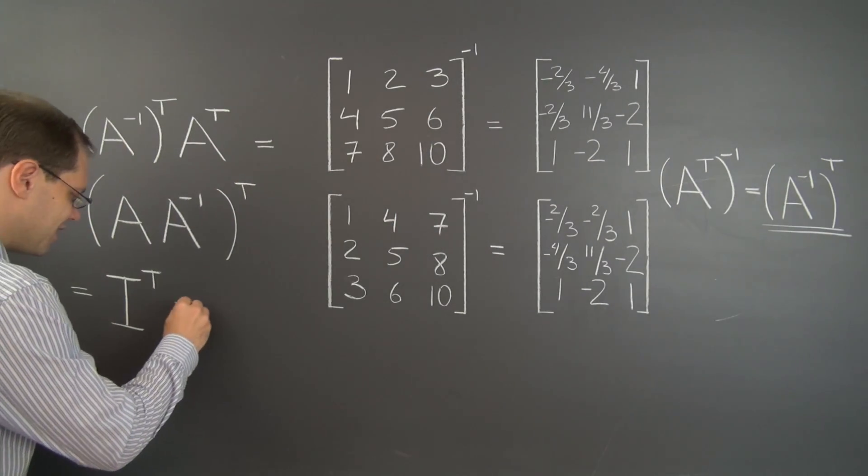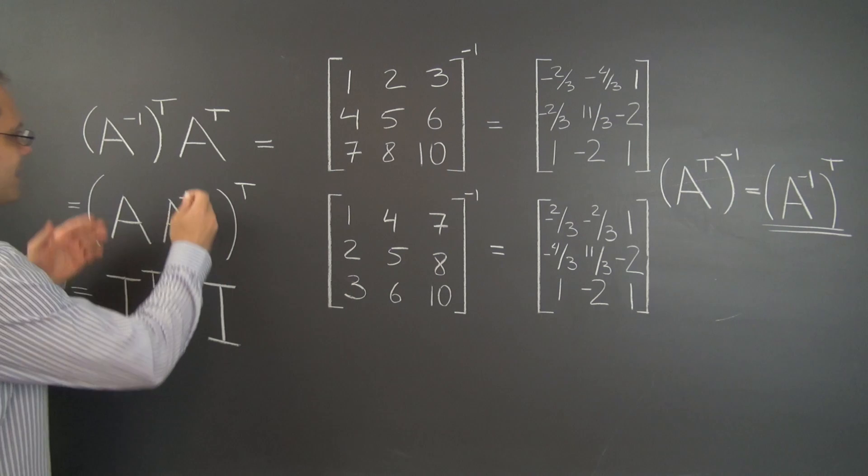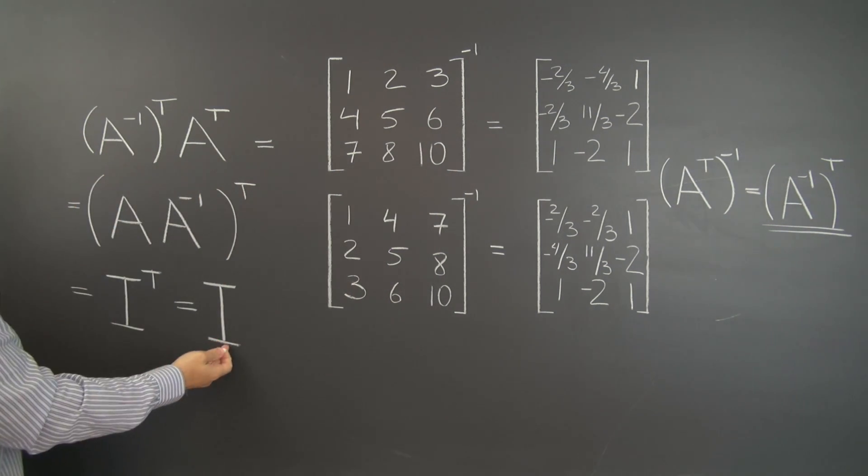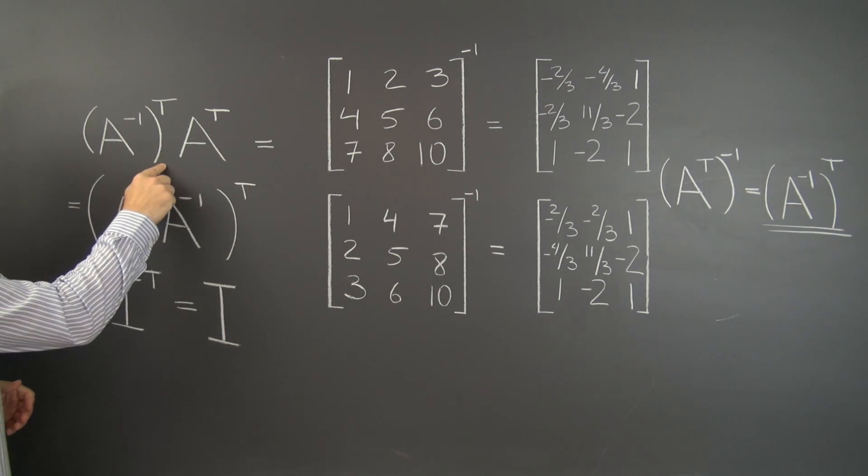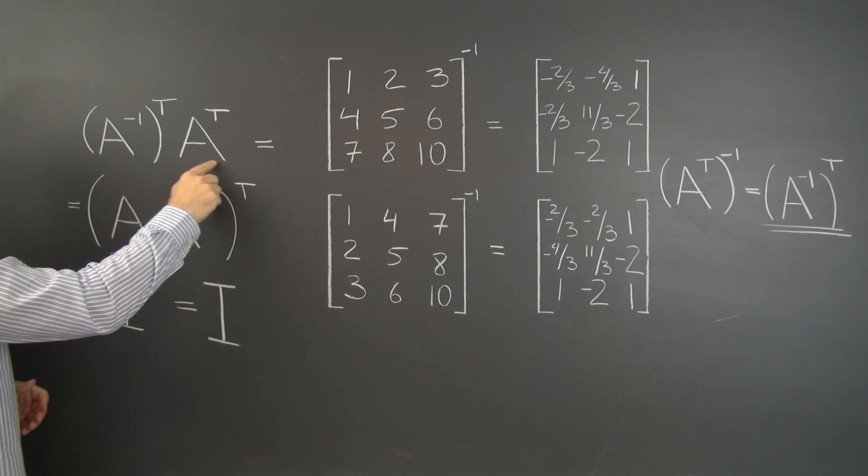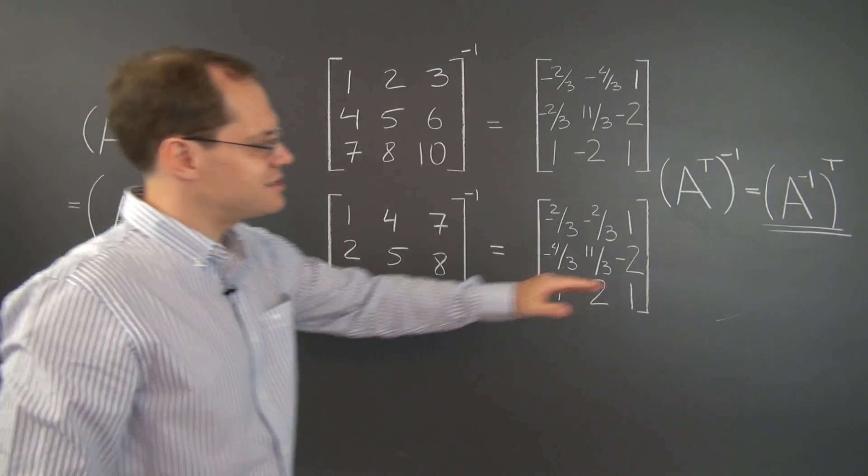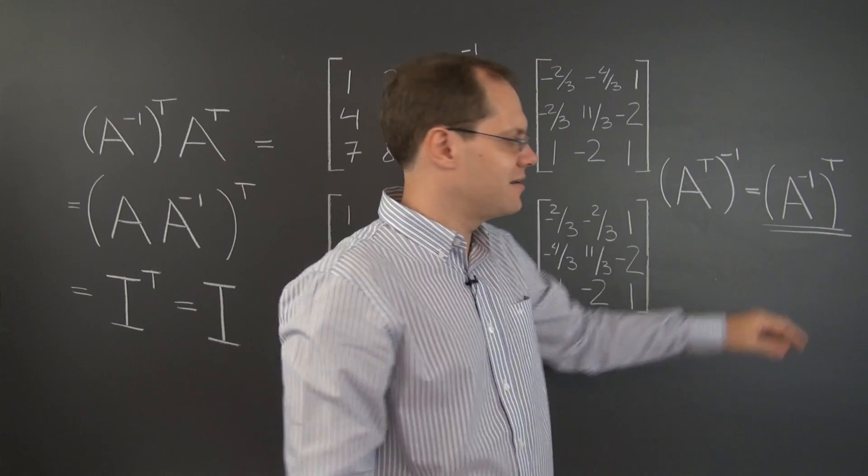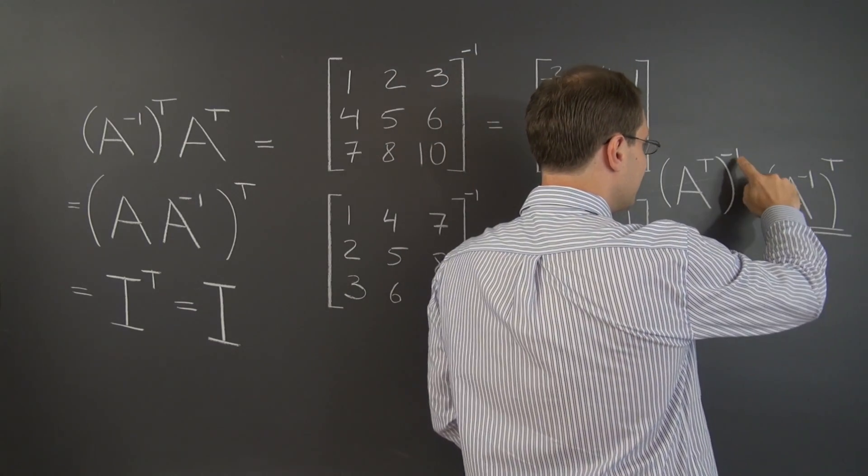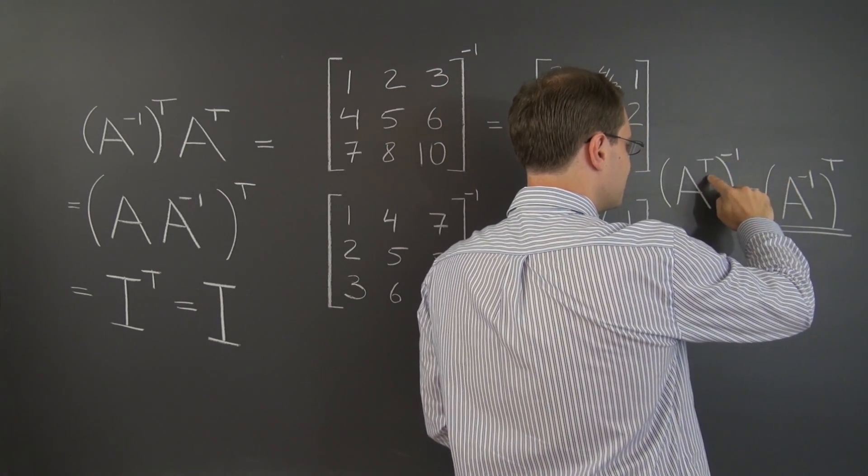And we have arrived at the desired answer. That this product is the identity matrix and therefore this matrix right here is the inverse of A transpose, which is exactly what this identity is saying. That this matrix right here is the inverse of the transpose.